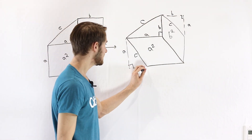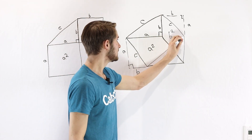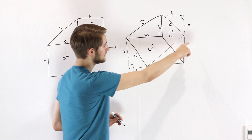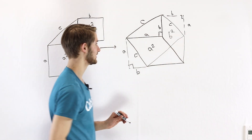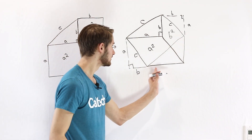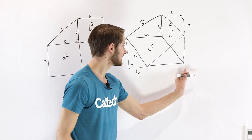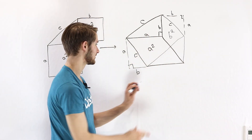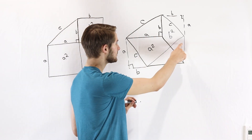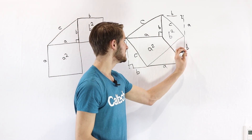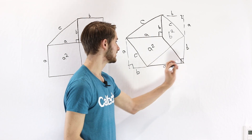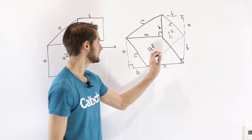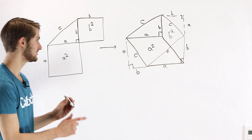If we connect the corner on the a squared parallelogram to the corner on the b squared parallelogram, notice right here we're going to have a side length of a, because this is a parallelogram, and over here we're going to have a side length of b. There's a right angle down here, which means this is the exact same triangle, and it's going to have a length of c.